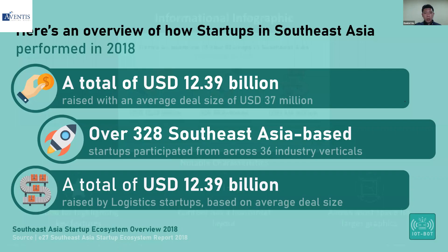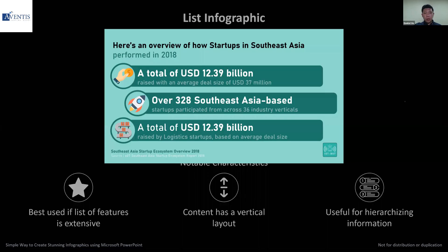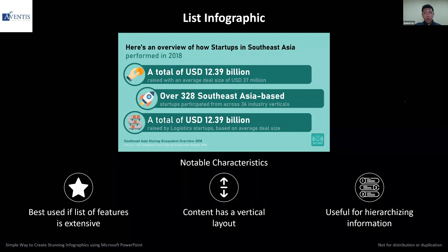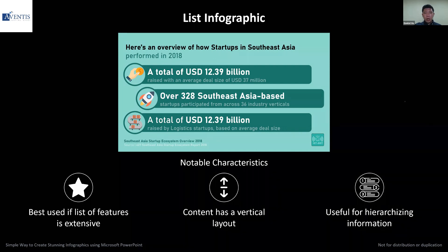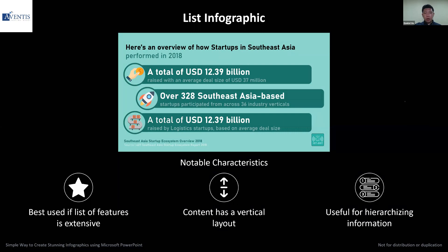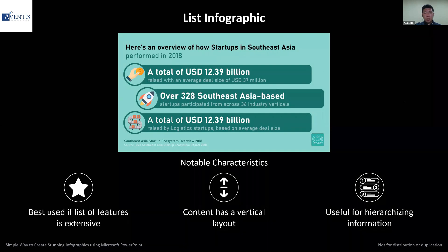The next one is the list infographic. This one is more commonly used when you have quite a number of points. It can be used in landscape orientation, but more commonly you'll want to use it in a portrait orientation design layout because then you can put in multiple points, like what you've seen in some of the infographic examples.